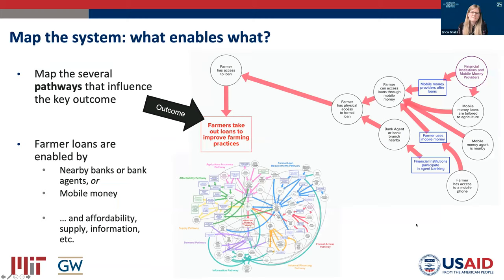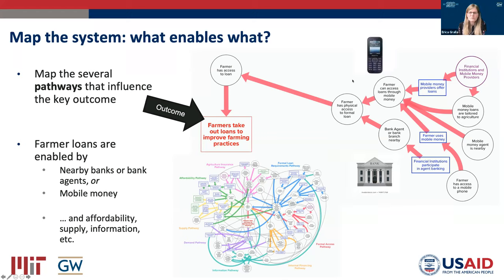The first step is to map the system, basically asking: what enables what? We want to get all of those causal pathways that influence the key outcome. In our example, the key outcome is that farmers take out loans to improve farming practices. Working backwards: one thing that enables farmers to take out loans is access — access comes either from having a bank nearby or from having access to a loan through mobile money. But farmer loans are enabled by a lot more than just access, including things like affordability, supply, and information. This final system map shows all the influences on that key outcome.